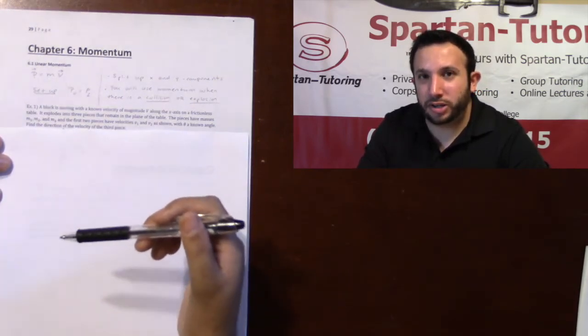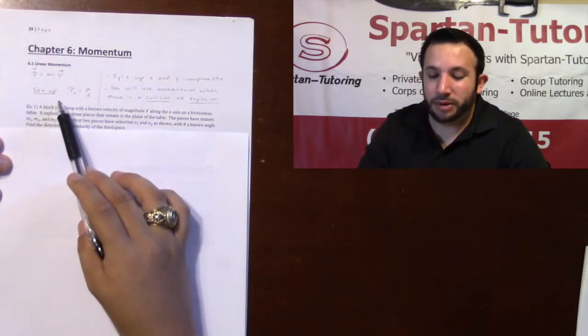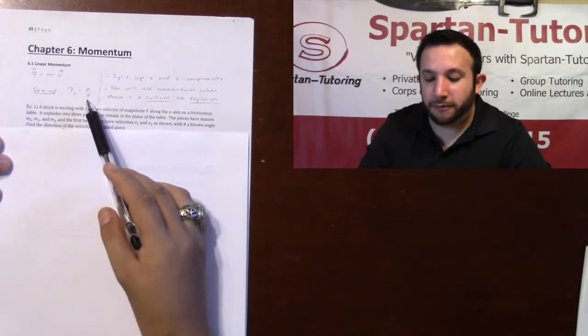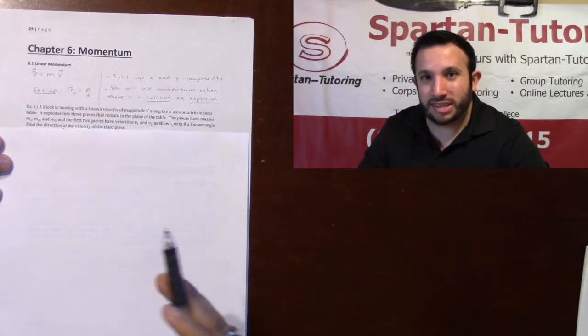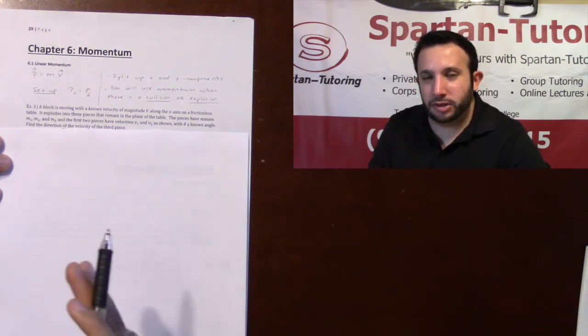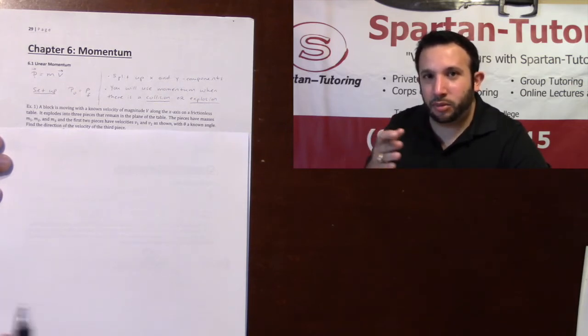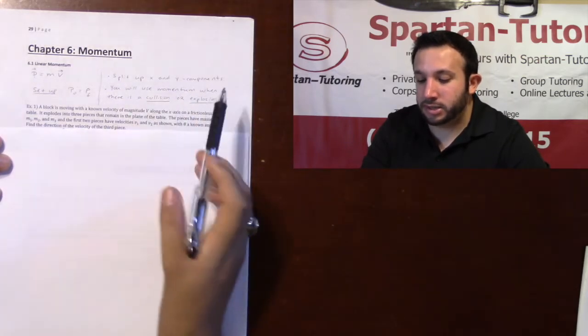The way that I'm going to set up every problem is I'm going to set all my initial momentum equal to all my final momentum. If you move in multiple directions you have an x and a y component. You need to split the x's and the y's up individually, kind of like we did back in kinematics where I kept all the x's and the y's separate. That's going to be your first thing - you split up your x and y components.